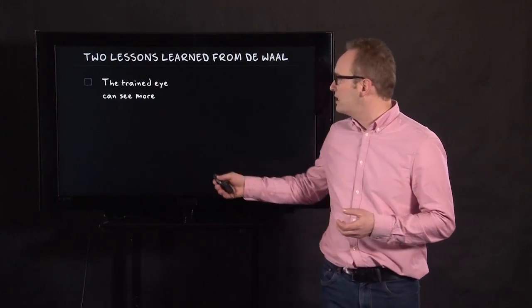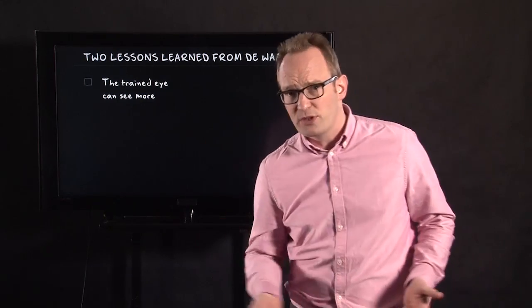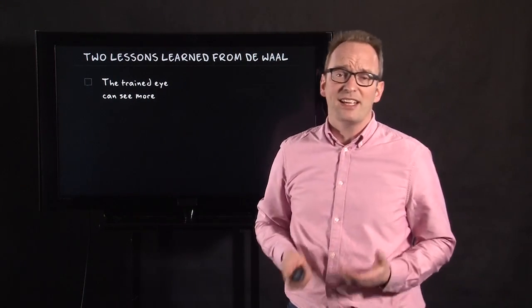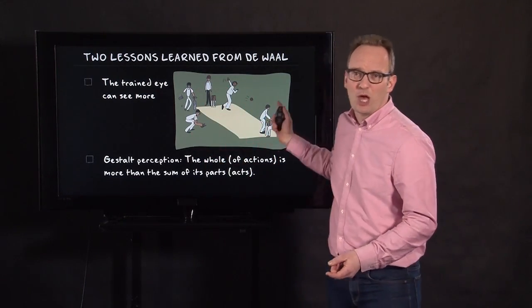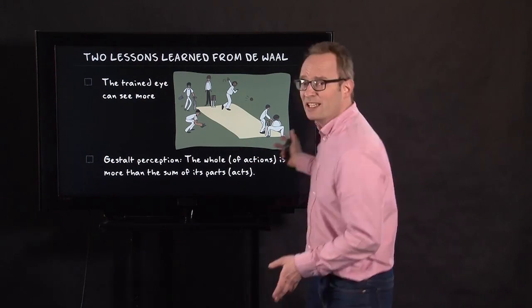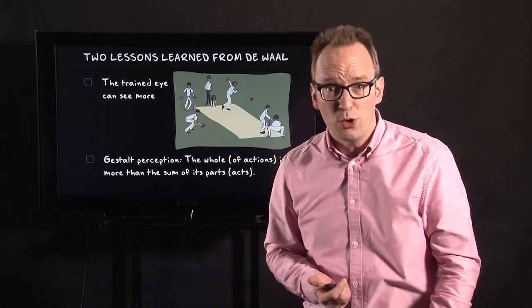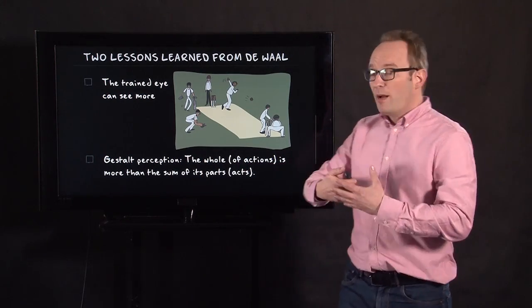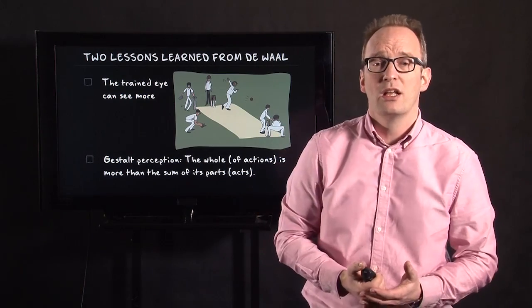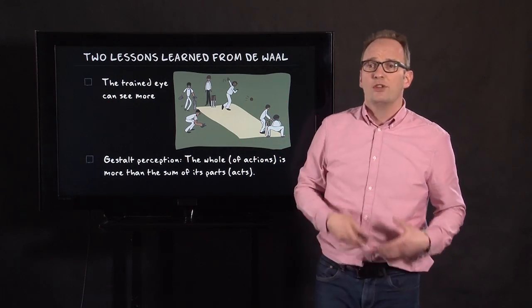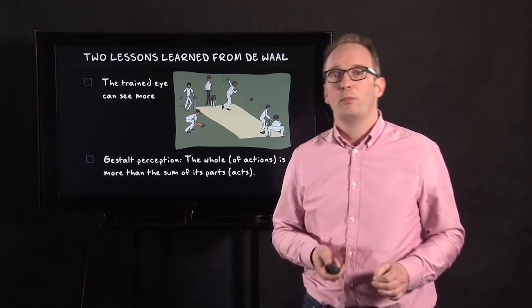So what lessons can we learn from de Waal? The first lesson is that the trained eye can see more. It really is an illusion to think that within one, two, or three observations you know how to observe. I'm not such a good observer simply because I didn't train enough. The second lesson relates to cricket — a test match that takes five days is really hard to understand if you don't know all the rules. Once you know the whole gestalt — the whole situation — you understand far more than when you only understand a few individual parts. The whole of actions is more than just the sum of each individual part.